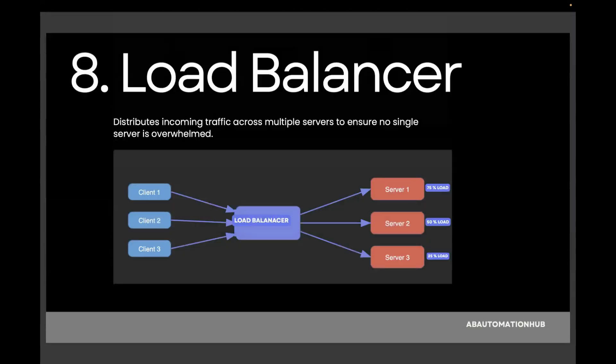The next topic is load balancer, which is one of the very important topics. It distributes incoming traffic across multiple servers to ensure no single server is overloaded. Imagine a busy restaurant with several waiters — instead of all customers crowding around one waiter, the host (the load balancer) directs new customers to the waiter who has fewer tables or is less busy. No waiter gets overloaded and everyone is served faster. In the tech world, the load balancer sends the first user to server A, the second to server B, the third to server C, and then starts again — this is the round-robin algorithm.